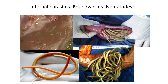The first internal parasite we look at is roundworms, sometimes referred to as nematodes. Some nasty pictures show what roundworms look like on the inside of animals — a dissected carcass reveals these worms in one of the organs, with gastric juices suggesting it's probably the intestines or stomach.